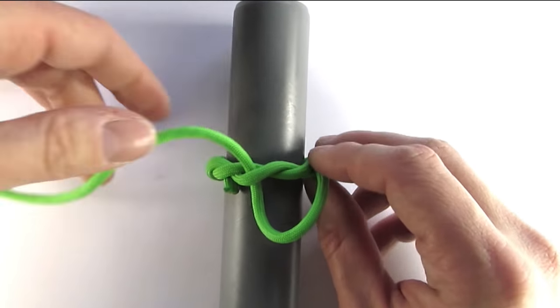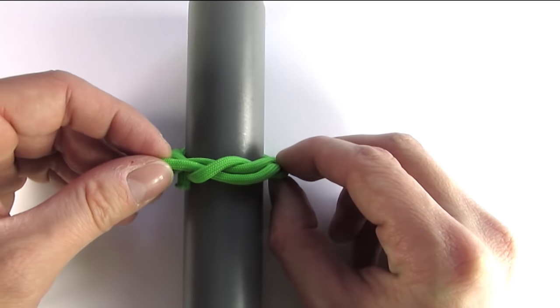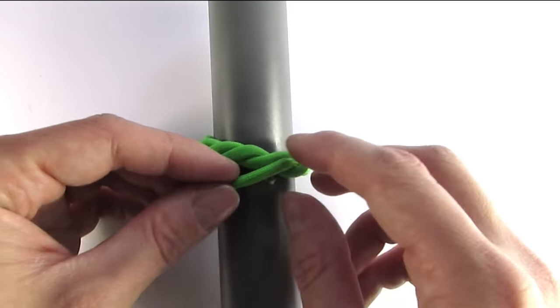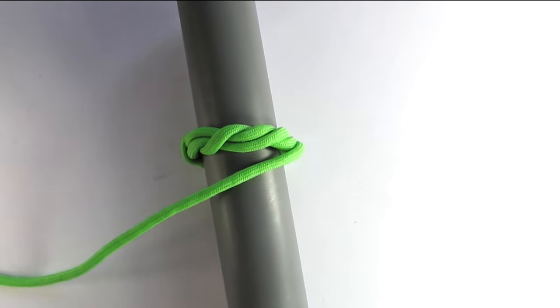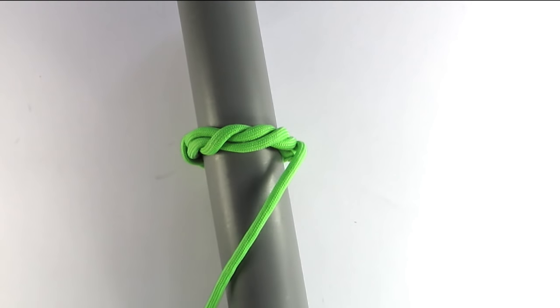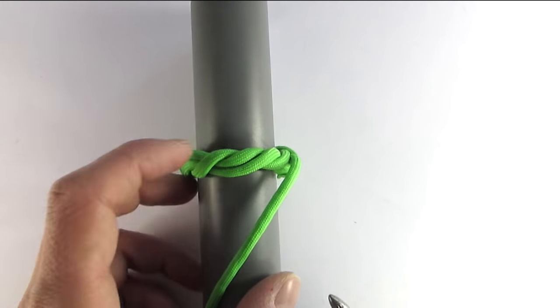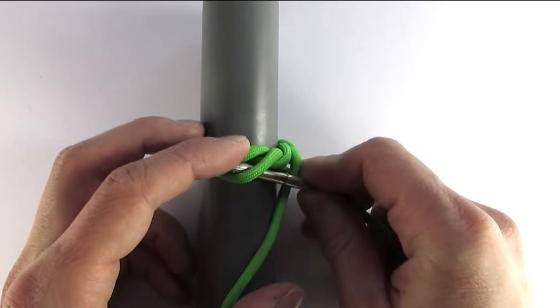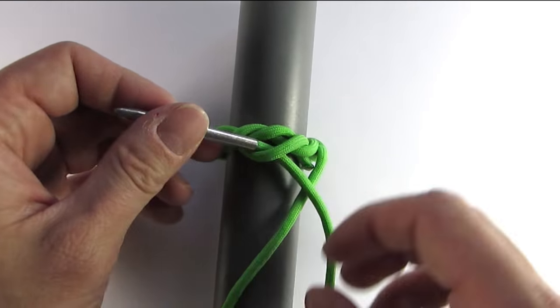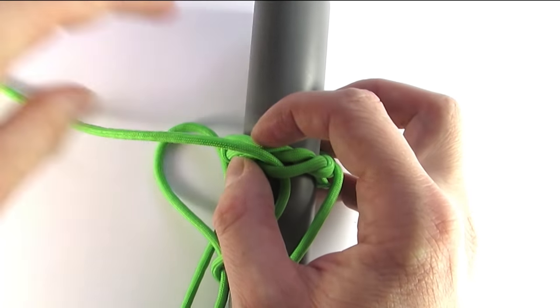Once you again reach the starting position, you're going to notice that your cords are doubled, and at this point all we're going to do is split them using the same technique that we used before. Going under, pulling it through the front.